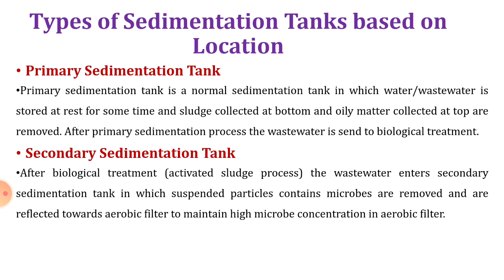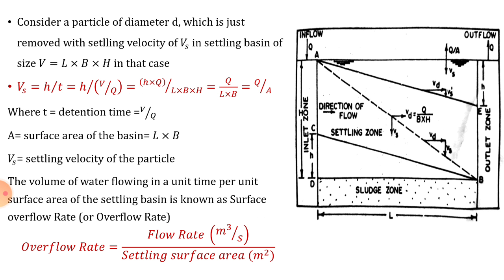Whereas in the secondary sedimentation tank, after the primary sedimentation tank, the wastewater coming into the secondary sedimentation tank undergoes biological treatments. After biological treatment — the activated sludge process — the wastewater enters the secondary sedimentation tank in which suspended particles containing microbes are removed and are returned towards the aerobic filter to maintain the high microbe concentration in the aerobic filter. So the suspended particles with organic matter are decomposed and removed in the secondary sedimentation tank by biological treatment or activated sludge process.